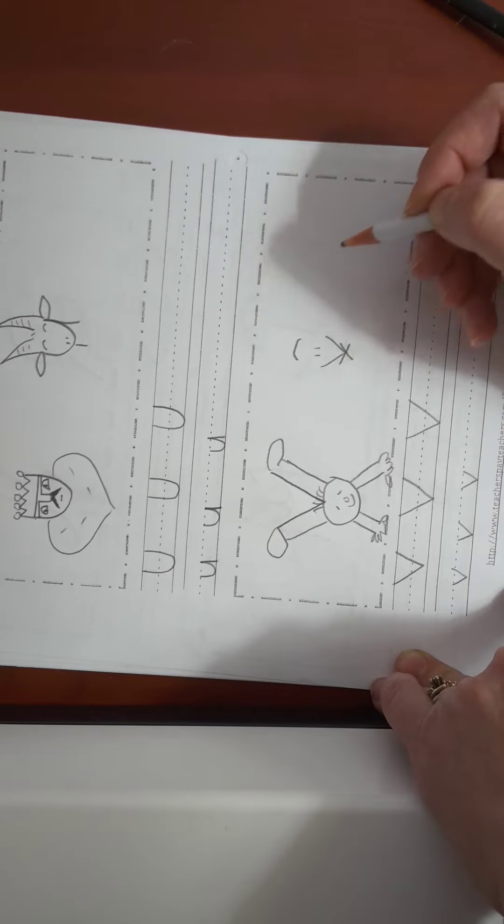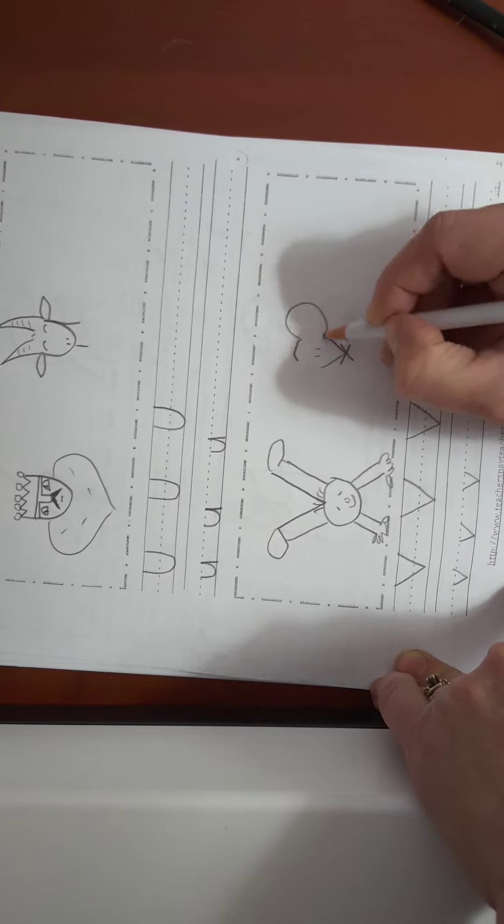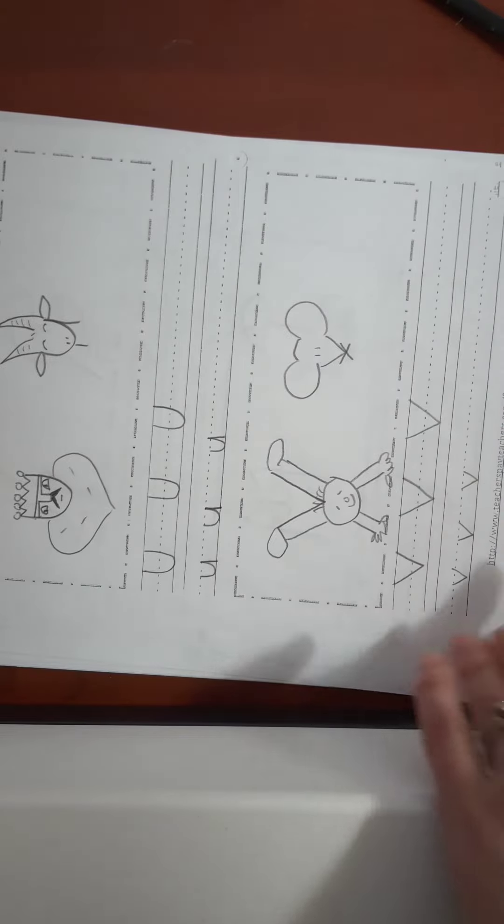Put a curve right here and a big letter C and another big letter C. It's a mouse.